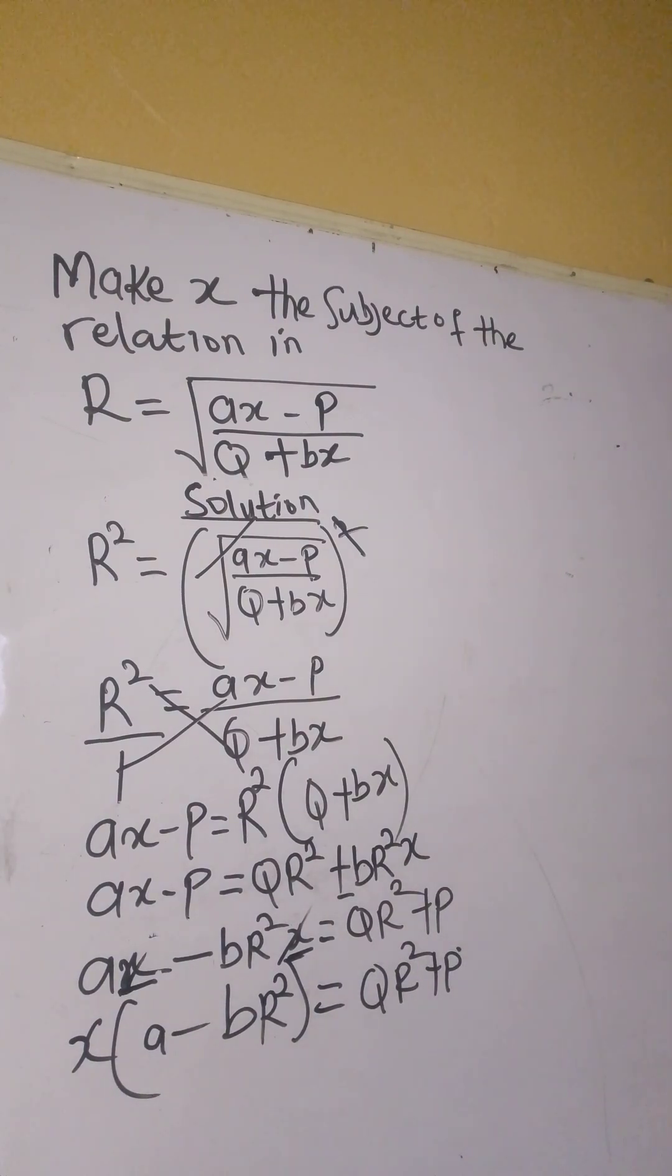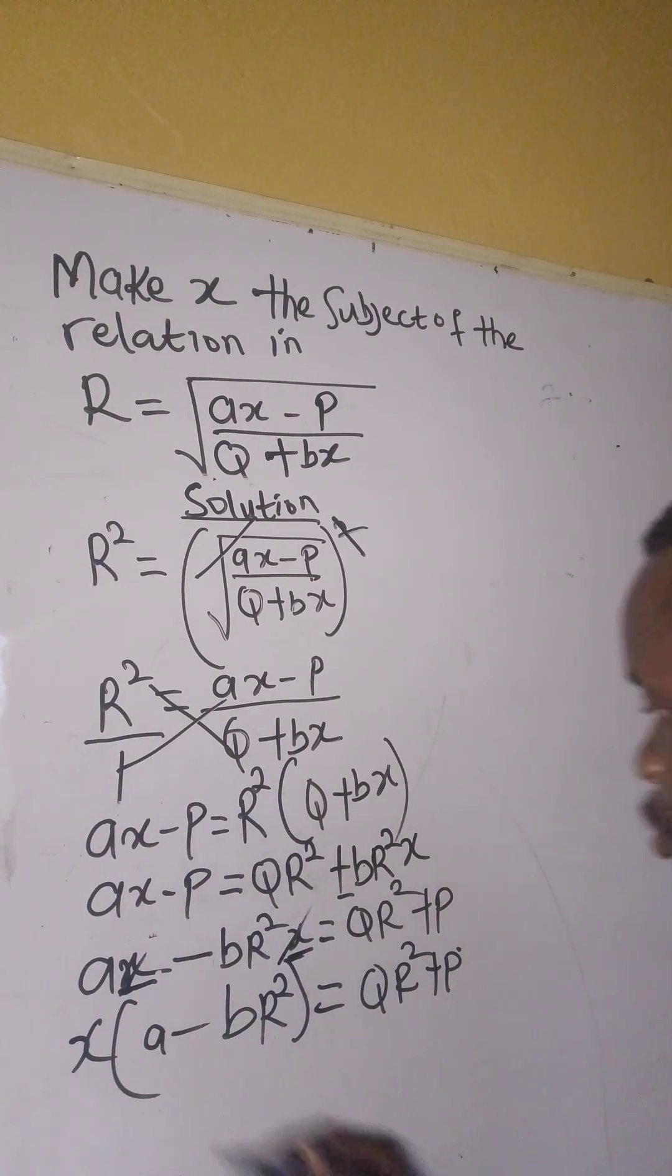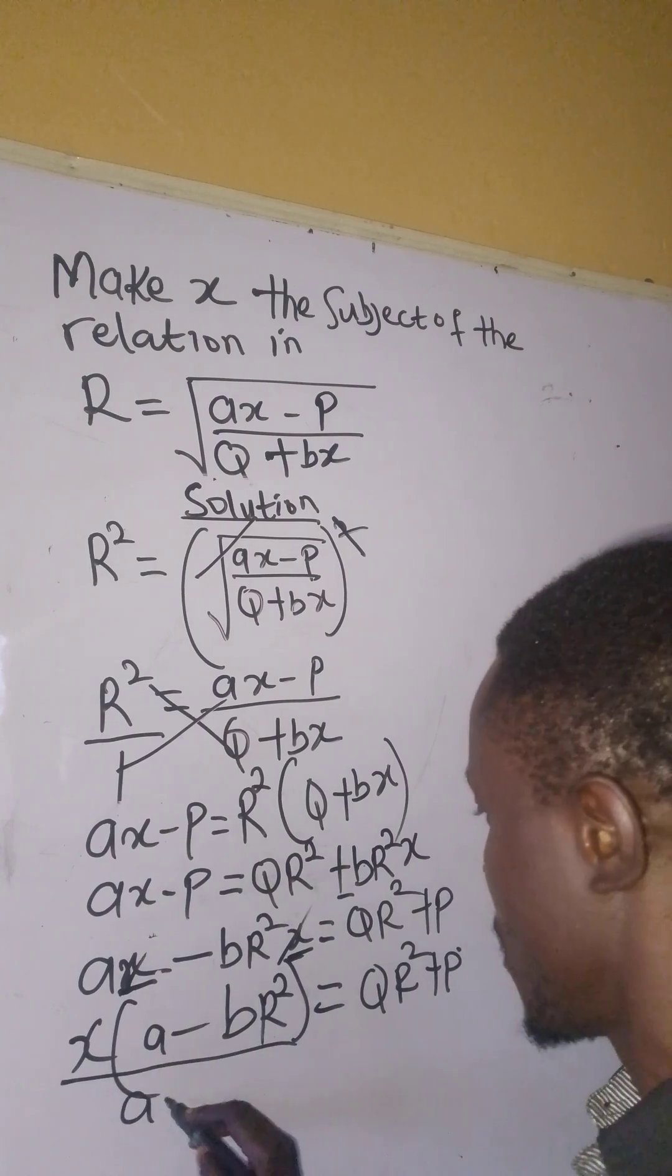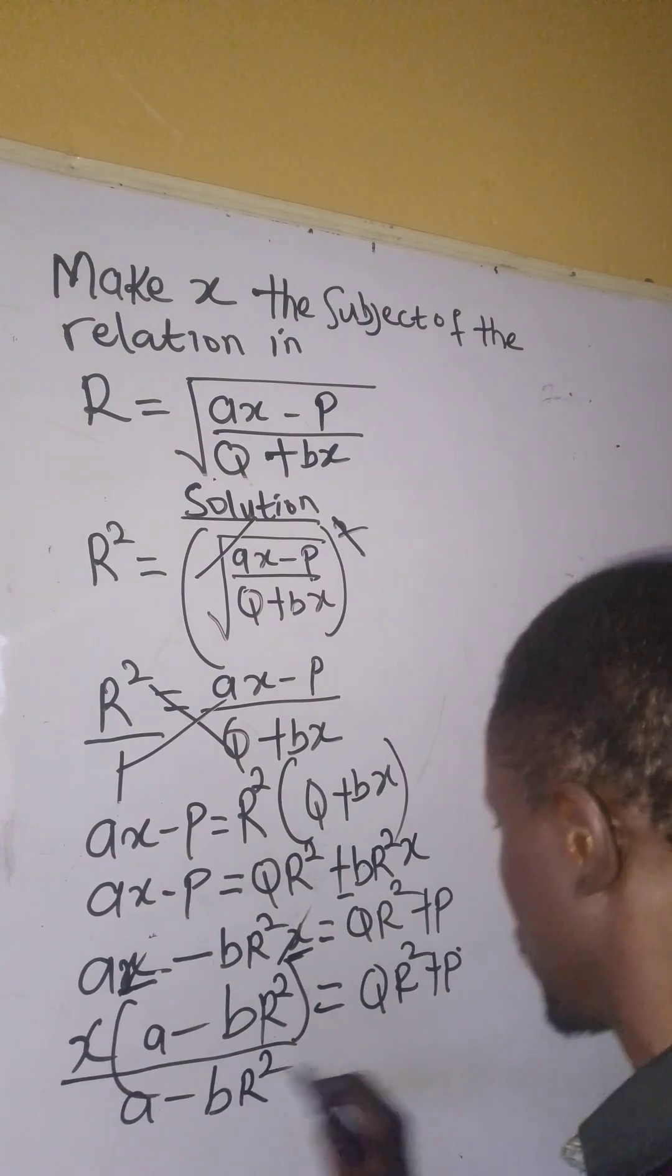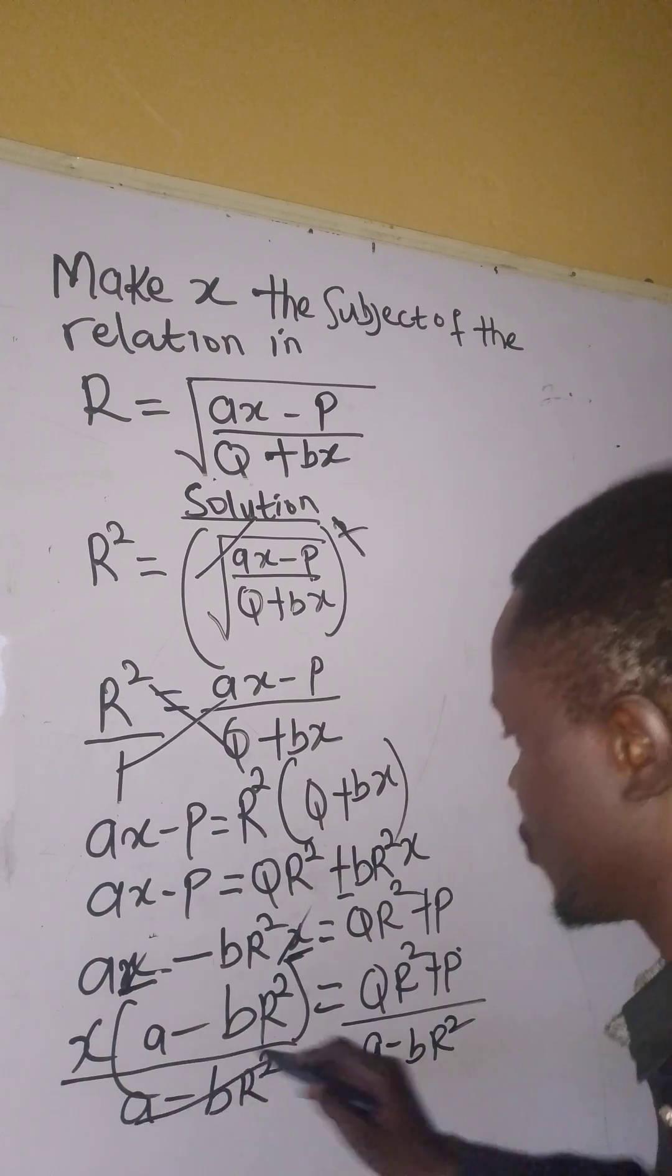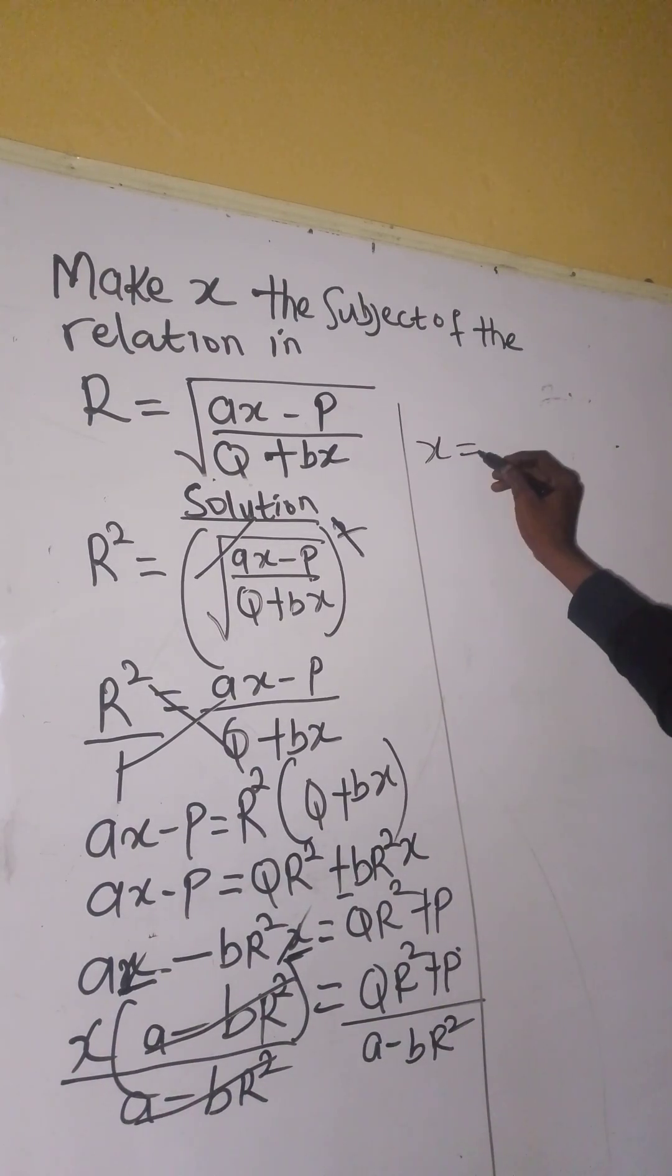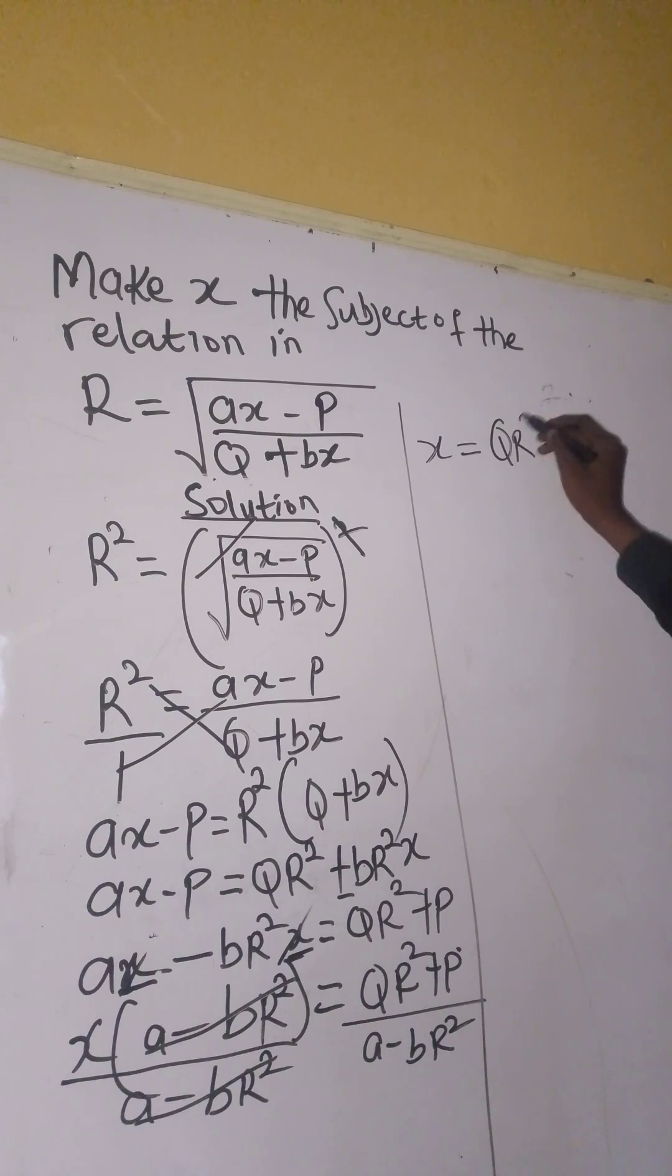So what can we do again? What can we do? Now, what we need to do is this: this becomes a coefficient, so we divide both sides by the coefficient. This will cancel this. Therefore, x equals (qr² + b)/(a - br²). So this is our final answer.